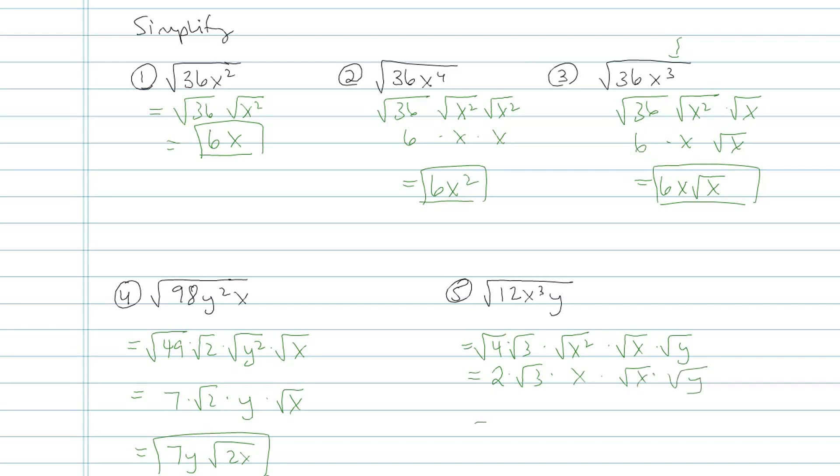Okay, now let's rewrite this a little better. The non-rooted stuff goes first and then usually we put the integer followed by the variables under the radical.